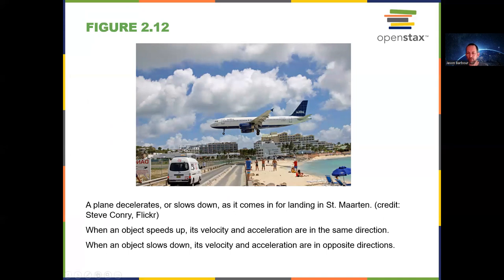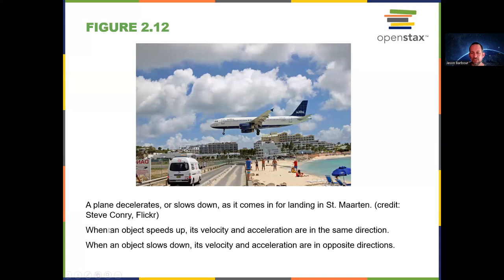Here you can see a plane flying — not technically one dimensional motion, but as it goes in for the landing, it's close to one dimensional on a slant. There are two important sentences here: when an object speeds up, its velocity and acceleration are in the same direction. When an object slows down, its velocity and acceleration are in opposite directions.